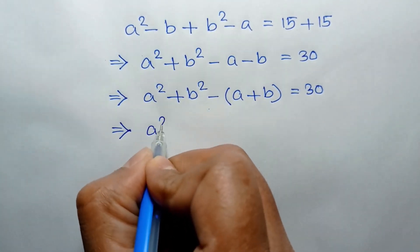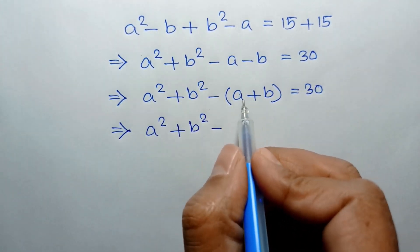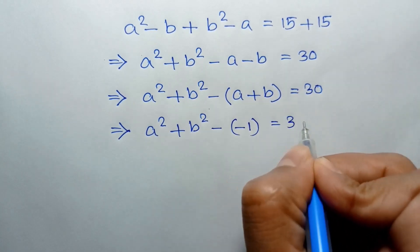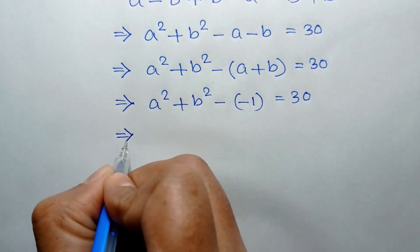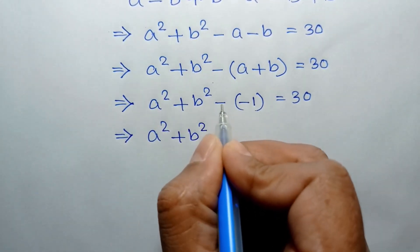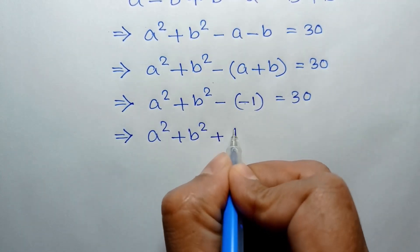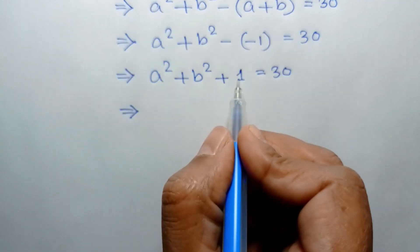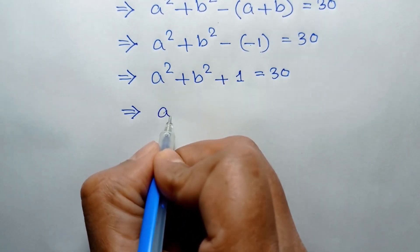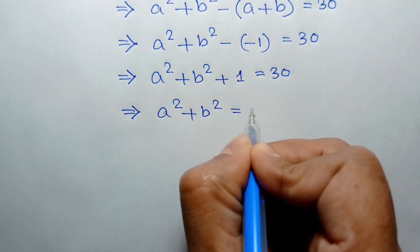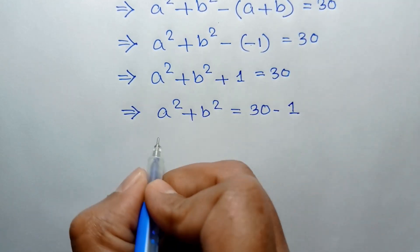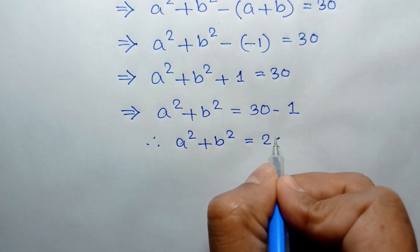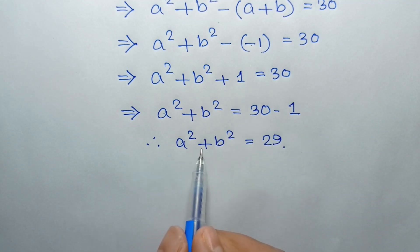So A squared plus B squared minus (A plus B) equals 30. Substituting the value of A plus B equals negative 1: A squared plus B squared minus (negative 1) equals 30, which means A squared plus B squared plus 1 equals 30. Taking 1 to the right side, A squared plus B squared is equal to 30 minus 1, which is 29.